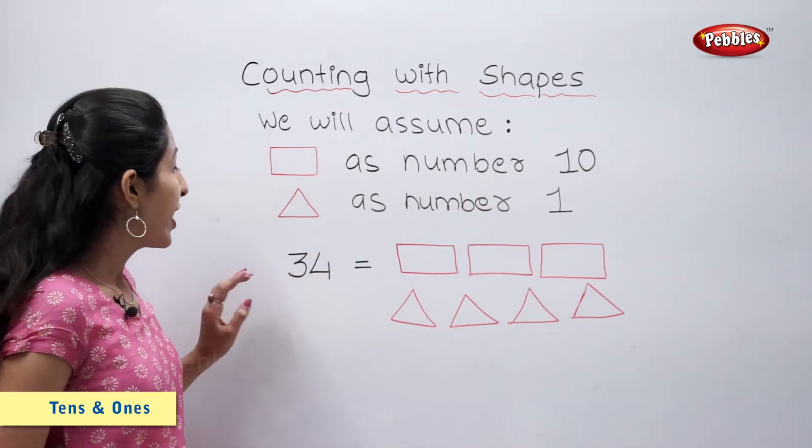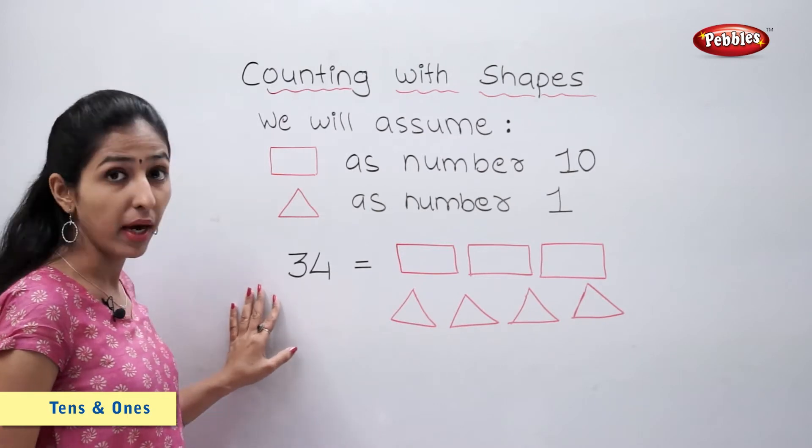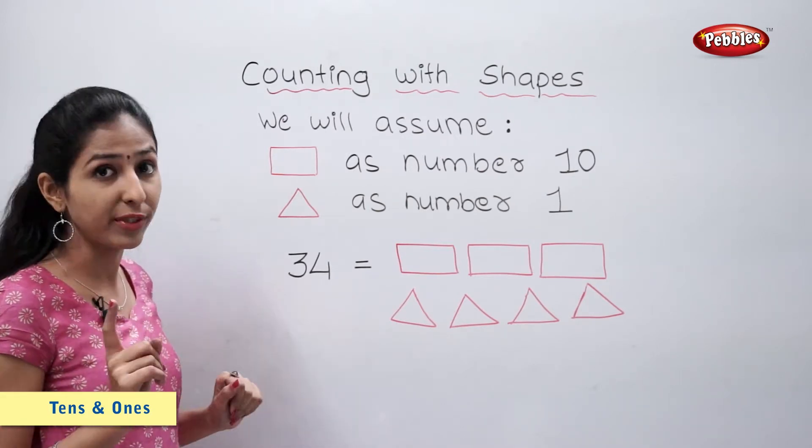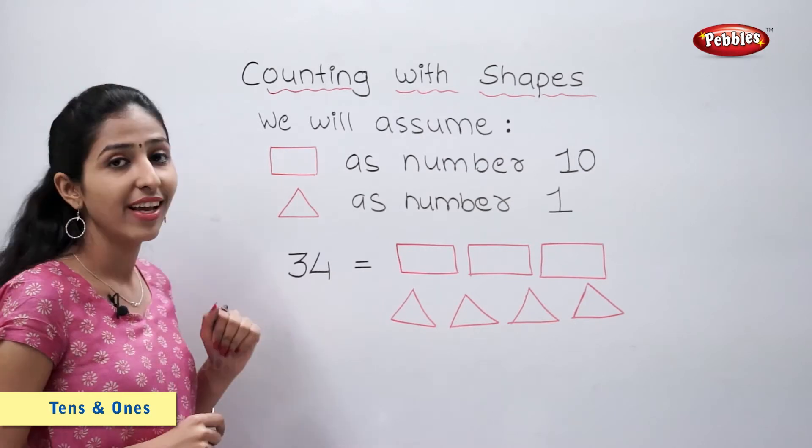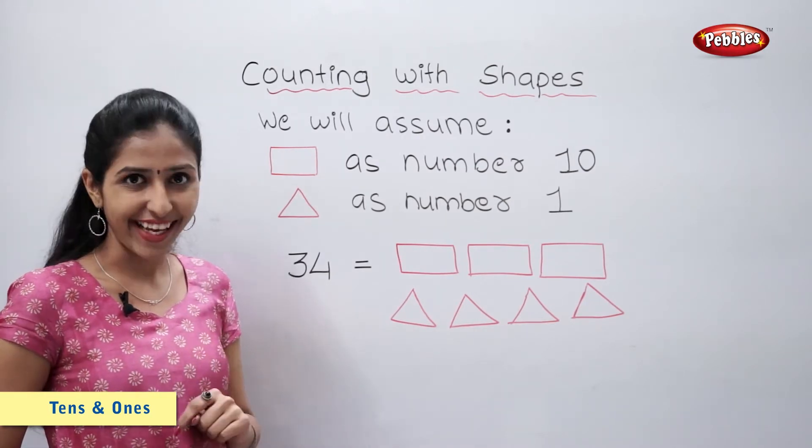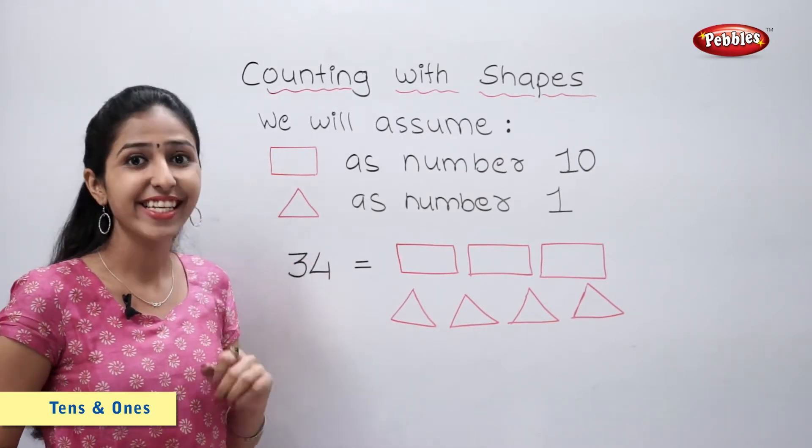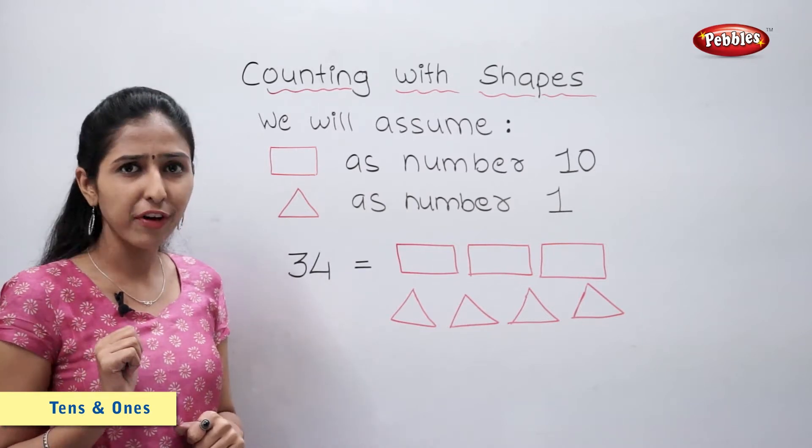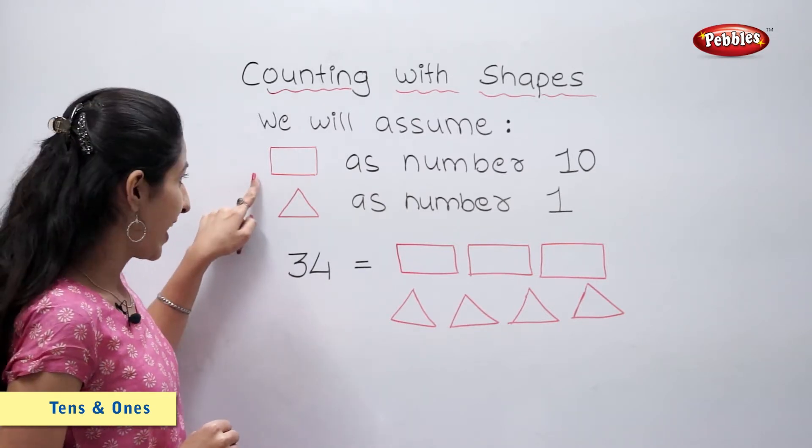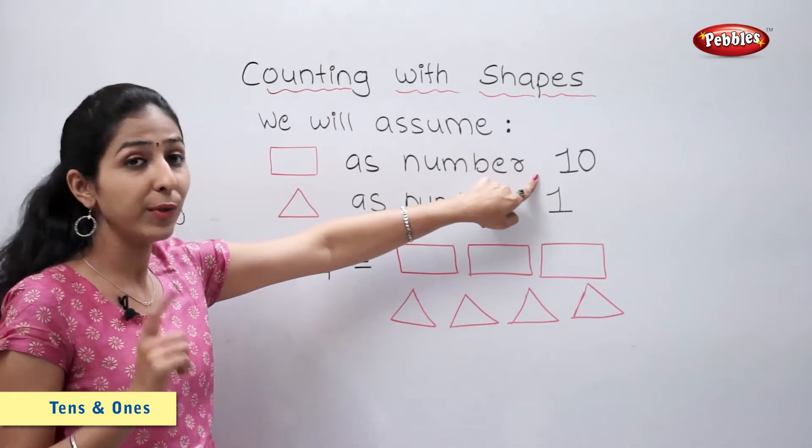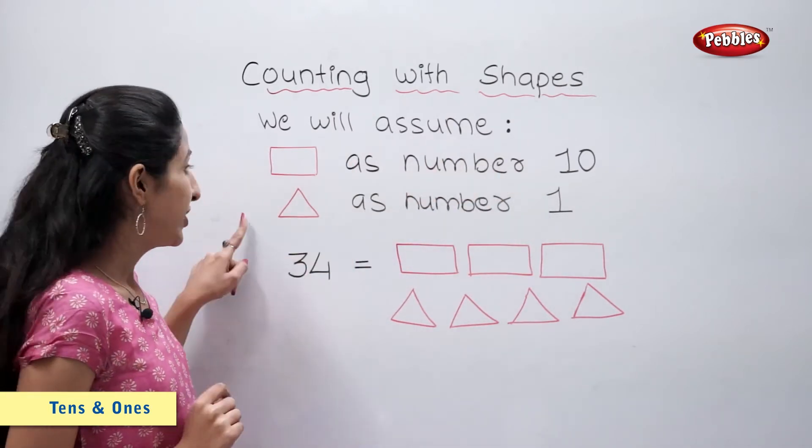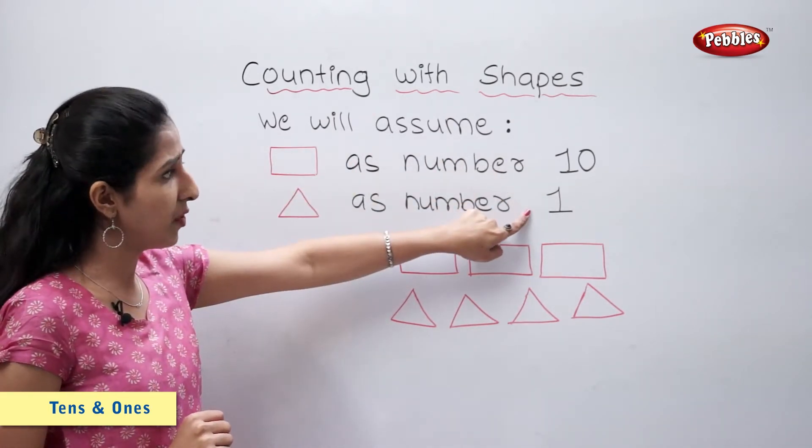Now suppose if I want to show number 34 using these shapes. Number 34 is 3 tens and 4 ones. Rectangle is equal to number 10. Triangle is number 1.